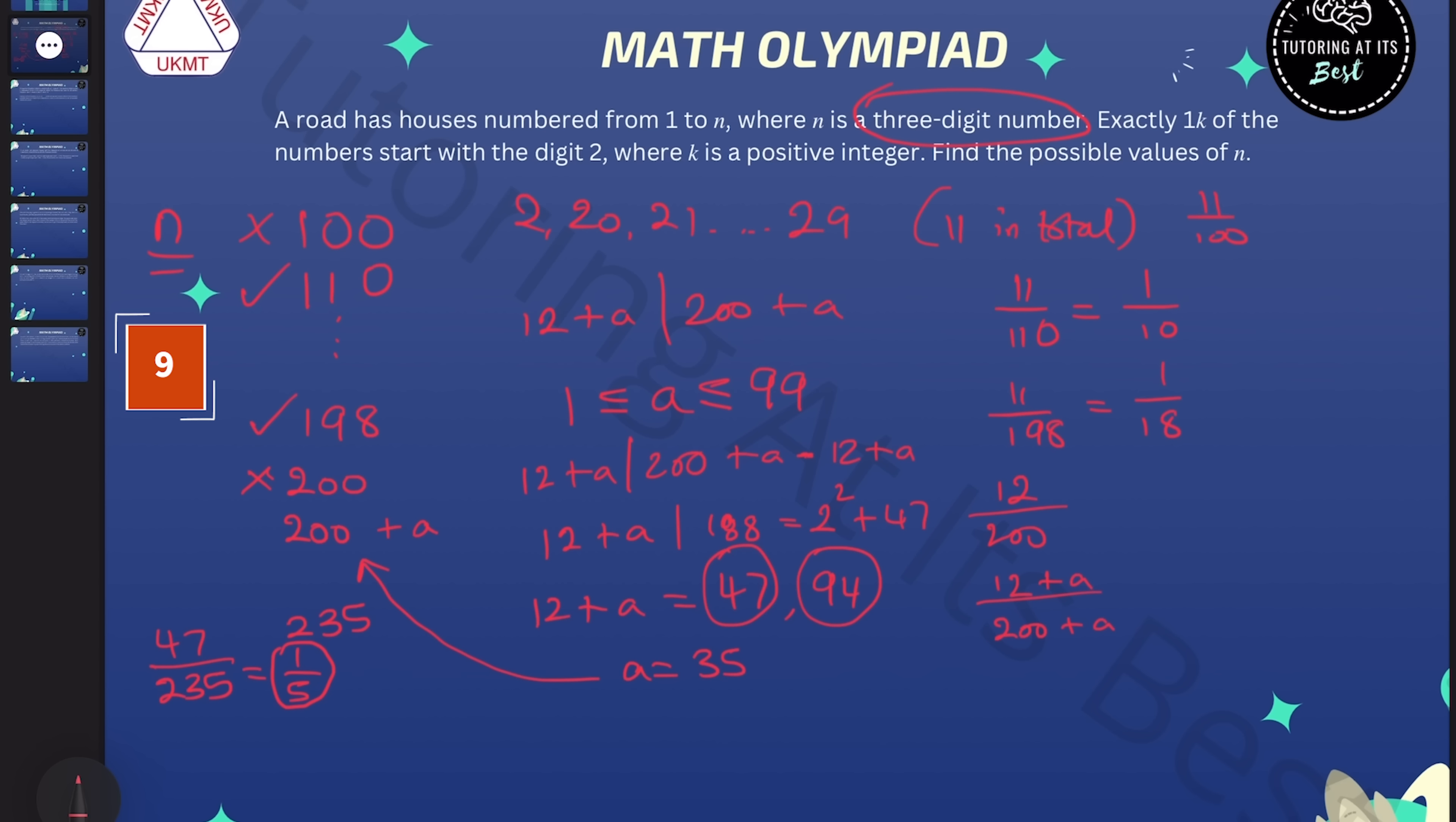And now when 12 plus a is 94, we then know that gives us 282 as n. And that gives us 94 over 282, which is equal to 1/3, which is also another possible value.